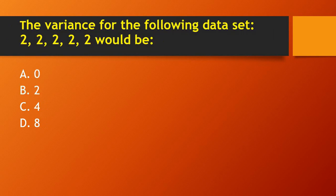Next question: the variance for a data set where all numbers are the same — for example, 2, 2, 2, 2, 2, 2 — would be 0, 2, 4, or 8? If all numbers in a data set are the same, the variance is 0. The right answer is 0.